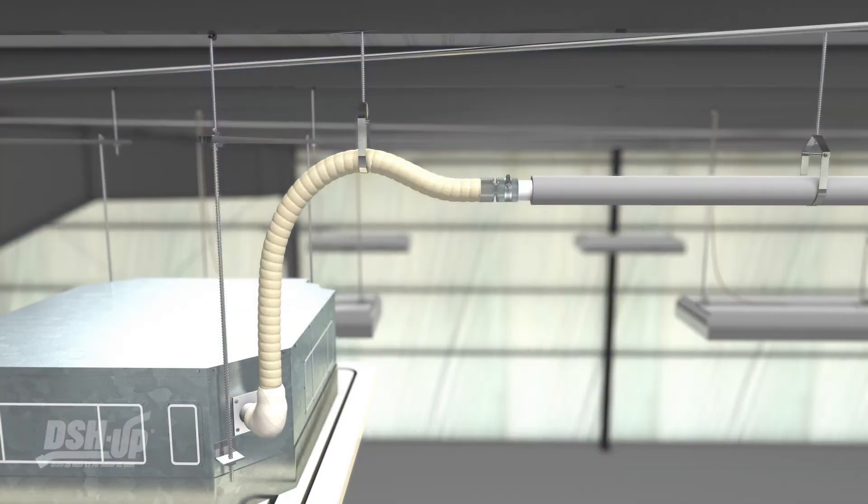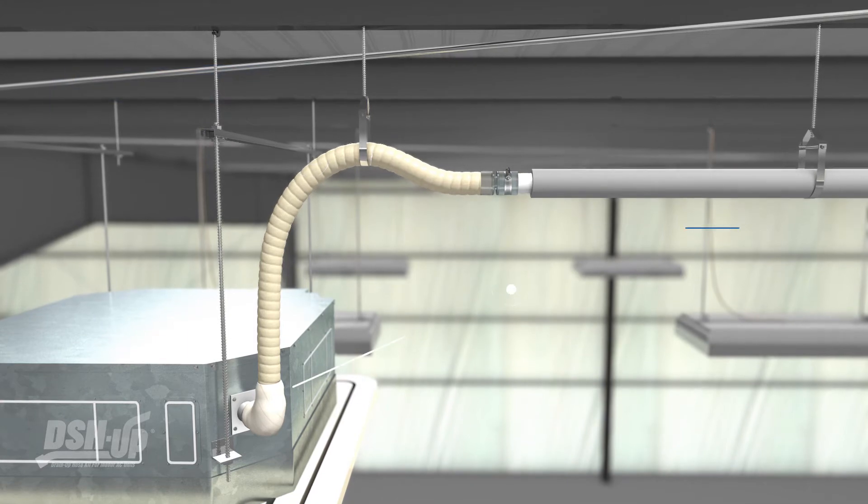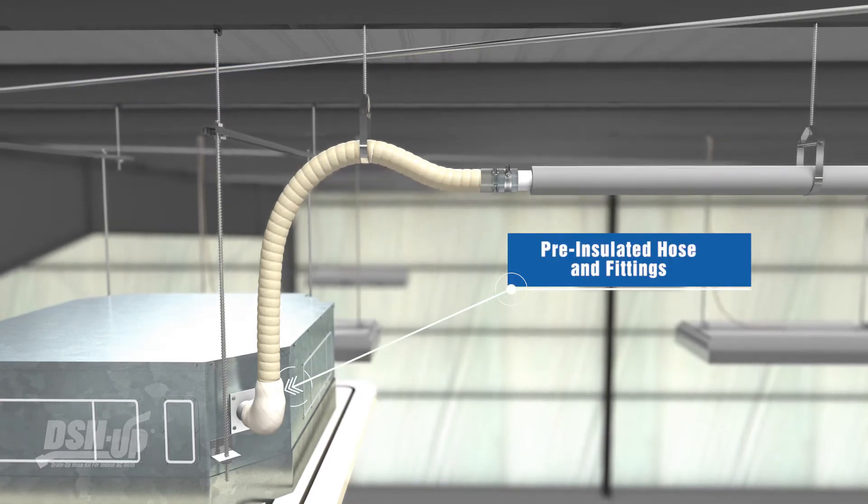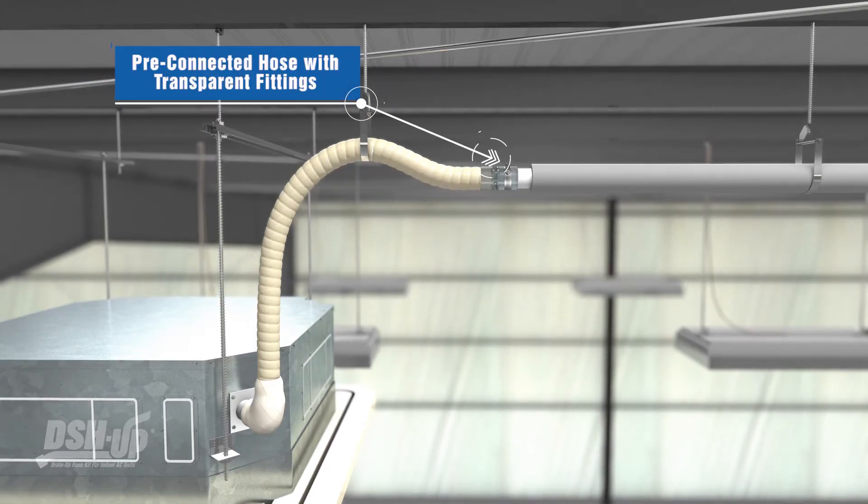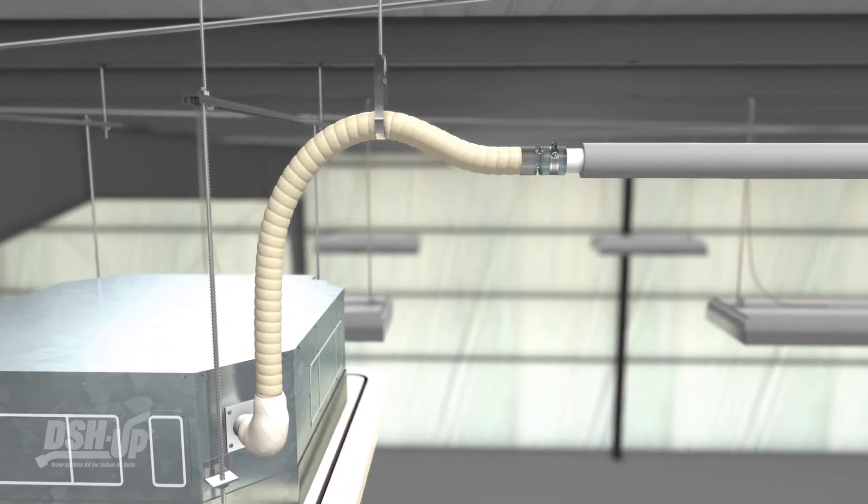Inaba Denko's innovative indoor DSH-UP drain-up hose kit solves these issues while reducing time, materials, and leaks with its flexible drain hose, pre-insulated hose and fittings, and pre-connected hose with transparent fittings.